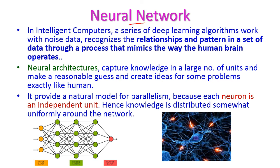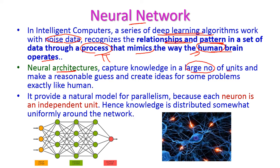Neural network is a sub-part of artificial intelligence. Here, a series of deep learning algorithms work with noisy data and try to recognize the relationships of the data and identify patterns through some process — through algorithms that mimic the way the human brain operates. The neural architecture captures knowledge from a large number of units and makes reasonable guesses and creates ideas for a particular problem, exactly like a human.